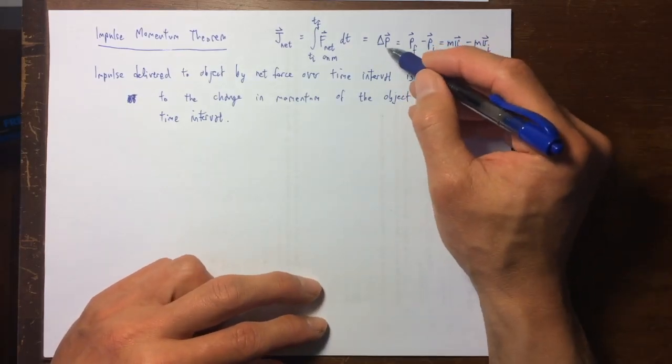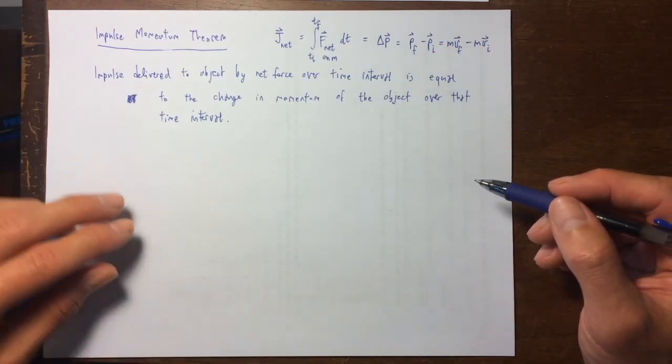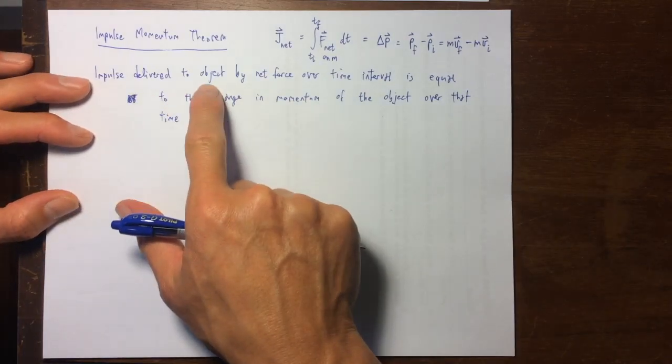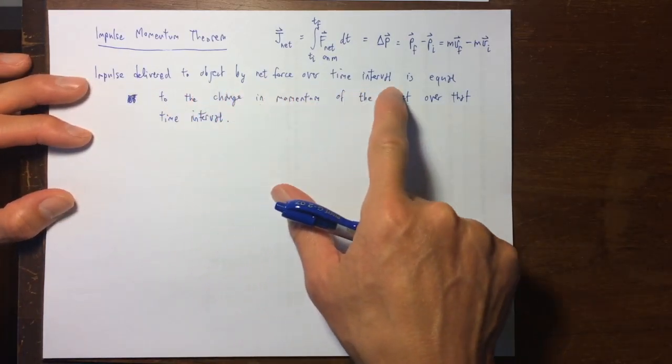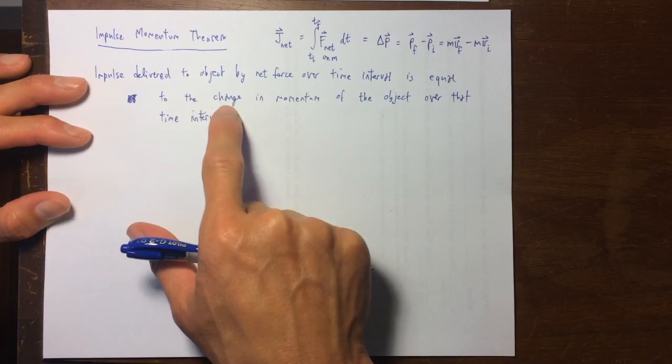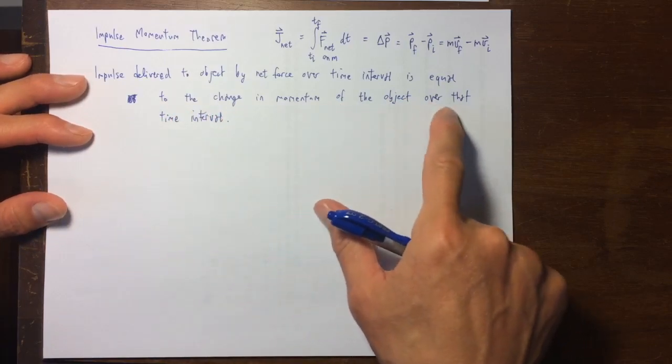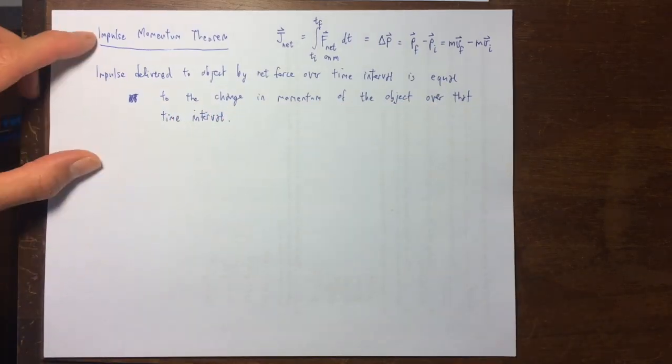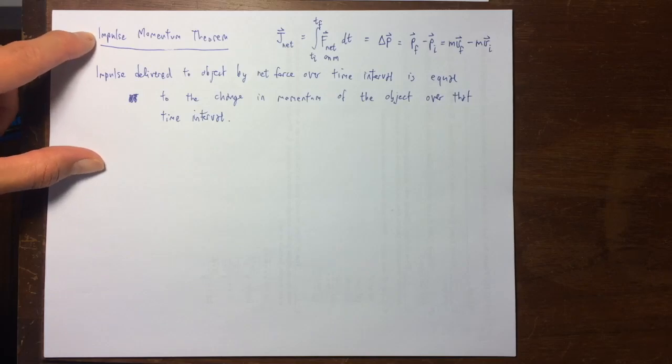Otherwise known as delta p. So you can say the impulse delivered to the object by a net force over the time interval is equal to the change in the momentum of the object over that time interval, and that's described as the impulse momentum theorem.